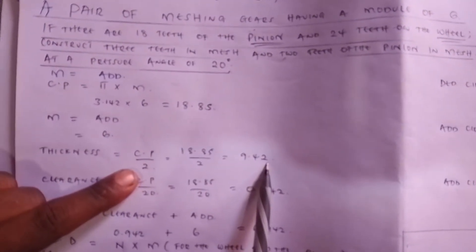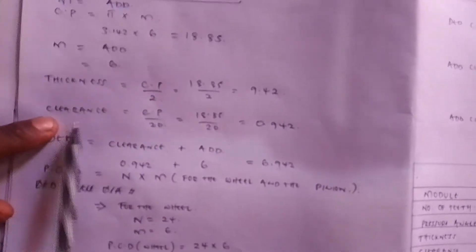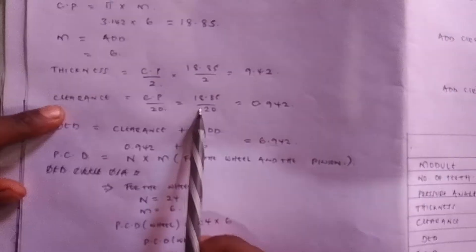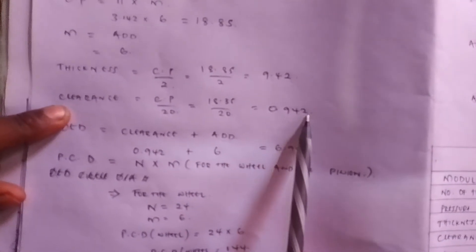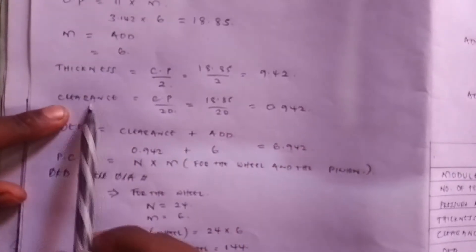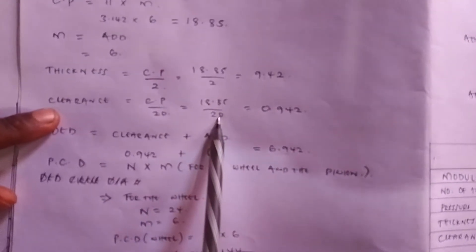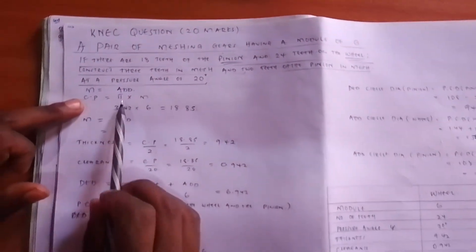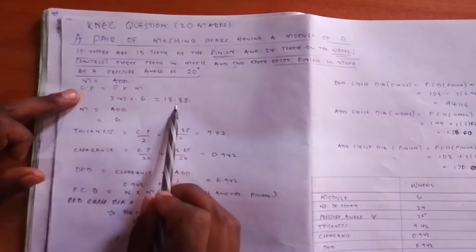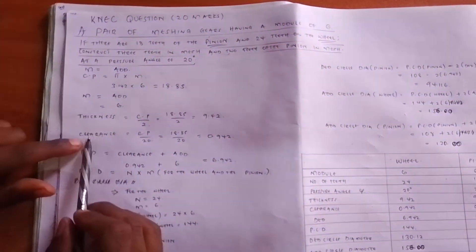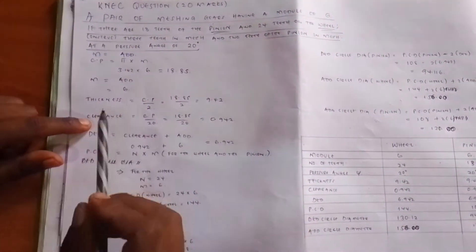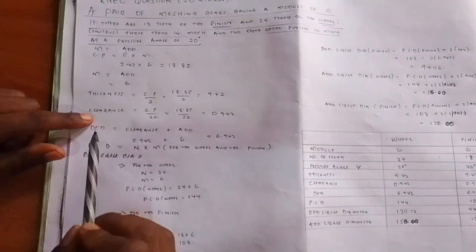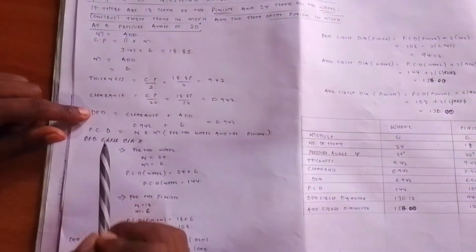9.42 becomes the thickness. Then look for the clearance. The clearance is equal to CP divided by 20, which is 18.85 divided by 20, which equals 0.945. You use the formula and put the figures in. The CP is equal to pi times module, and after we found our CP, we were able to look for the thickness and the clearance. That is why these formulas are very crucial.